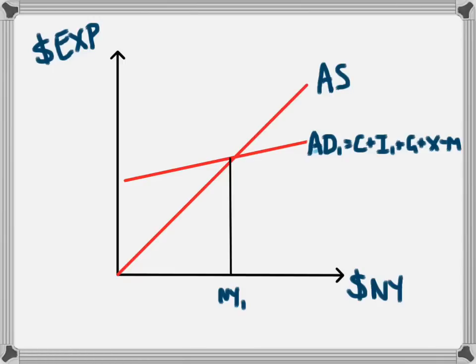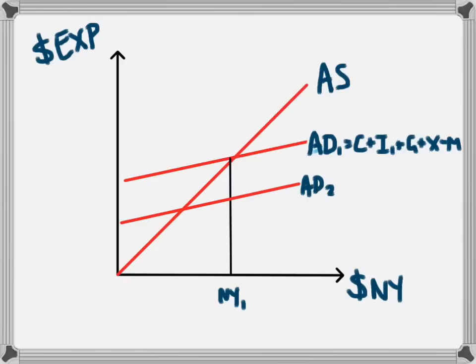The decrease in investment from I1 to I2 leads to a decrease in aggregate demand from AD1 to AD2. That decrease in aggregate demand leads to a decrease in national income from NY1 to NY2. So this has been a contractionary monetary policy: the government increased interest rates to decrease investment, decrease aggregate demand, and decrease national income.